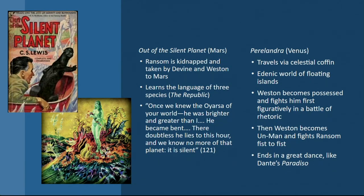In Perelandra, instead of being taken by rocket, Ransom travels via celestial coffin—which carries the death-to-self metaphor inscribed in the idea of the coffin. This time the Eldils are directly involved and take him to Perelandra. When he arrives, he discovers an Edenic world of floating islands where nothing has solidified. There is much more freedom here, not in a sense of license, but in a sense of true liberty.